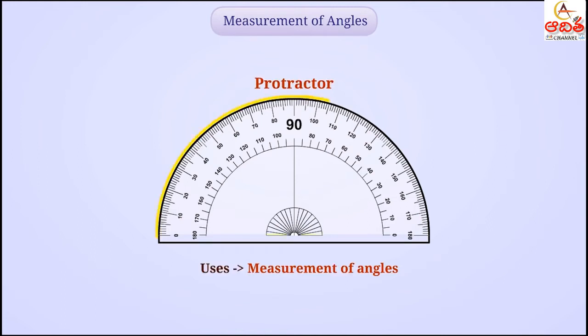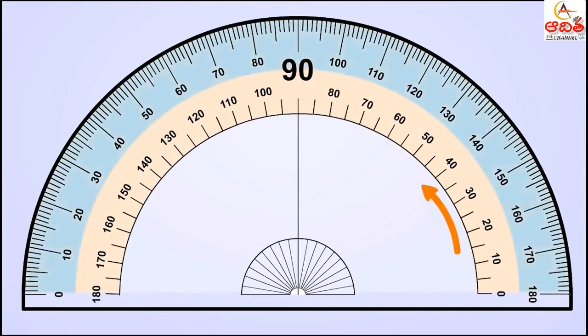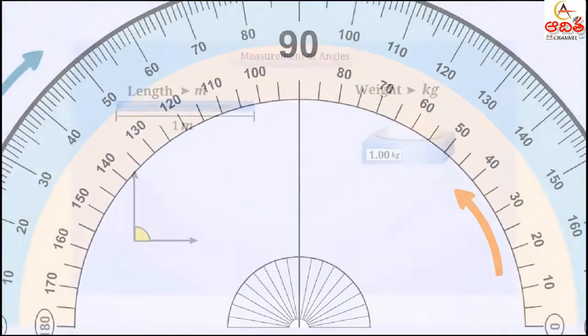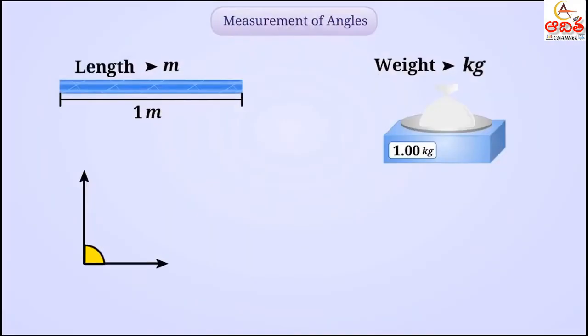Its edge is divided into 180 equal parts where each part is called a degree. To measure, 0 to 180 marks are marked on it from both the left and the right sides. Just as we measure length in meters and weight in kilograms, we measure angle in degrees and denote it by this sign.